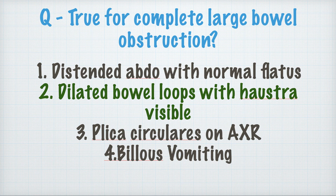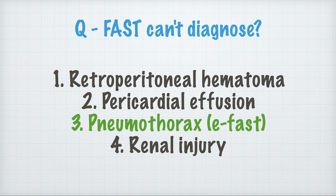True for complete large bowel obstruction: a normal flat plate abdomen is false; dilated bowel loops with haustrae visible is possible; plicae circulares on AXR is not possible; bilious vomiting is not present. The answer is dilated bowel loops with haustrae visible.